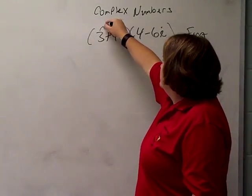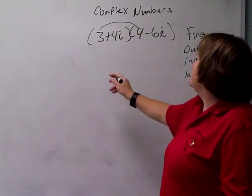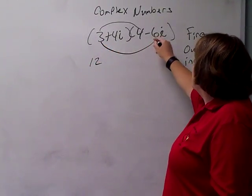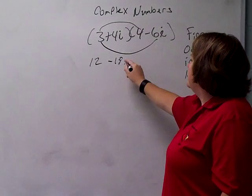So first, first one in the first parenthesis times the first one in the last parenthesis. 3 times 4 is 12. Outer, the outer edges. 3 times negative 6i is negative 18i.